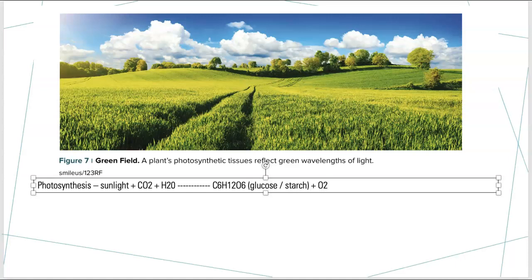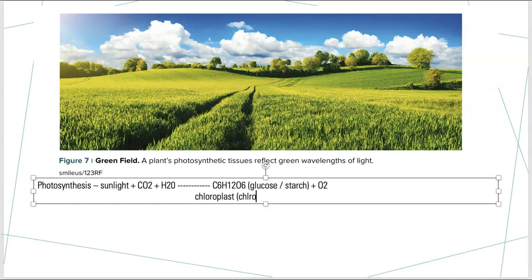Keep in mind the chloroplast is the structure that runs this, but it contains a green pigment chlorophyll. You can run photosynthesis with other pigments.